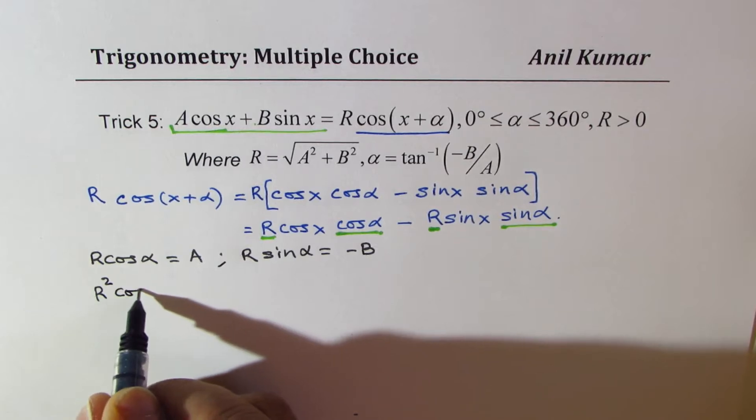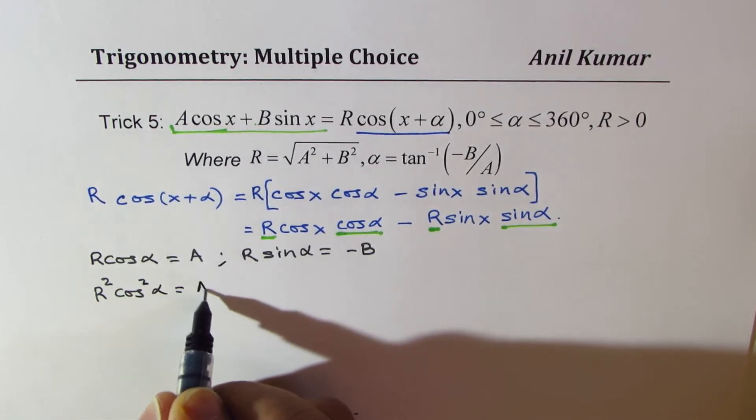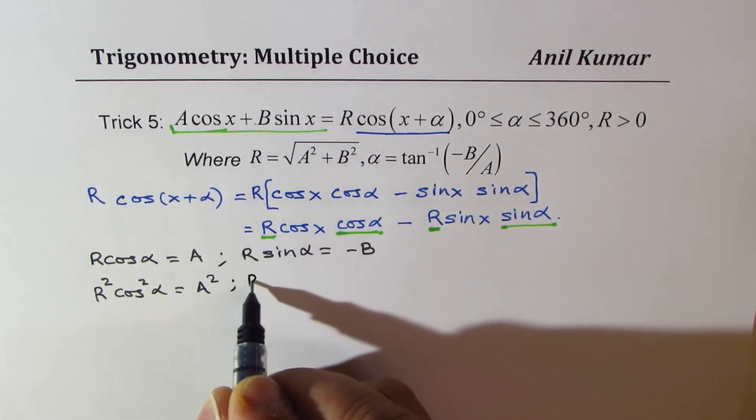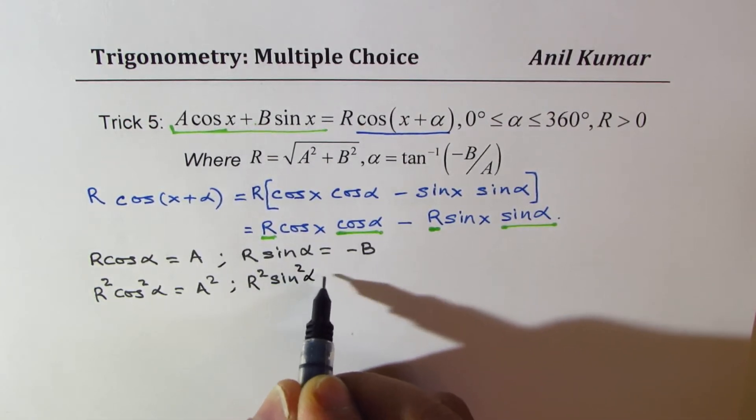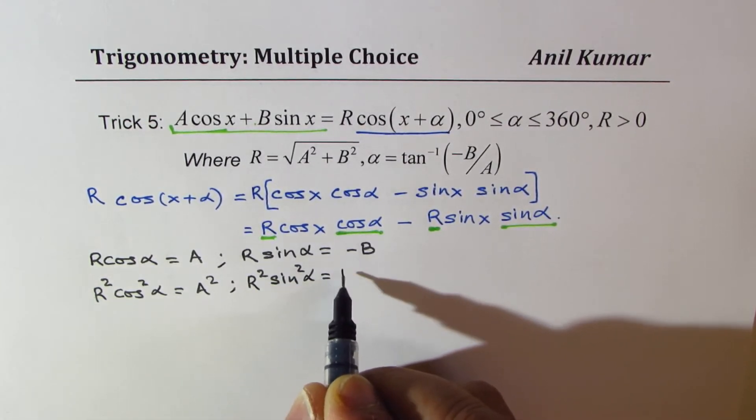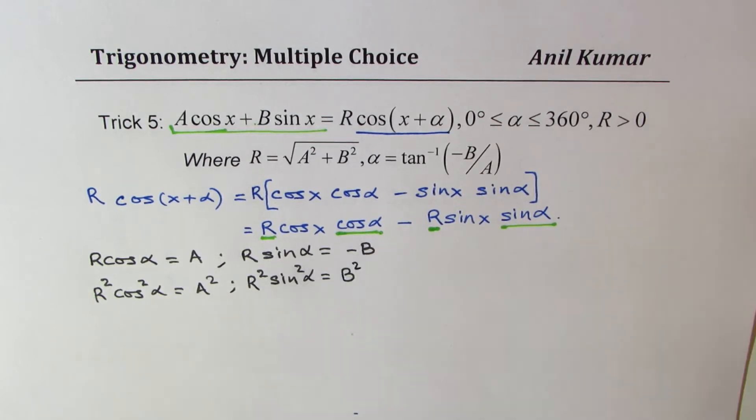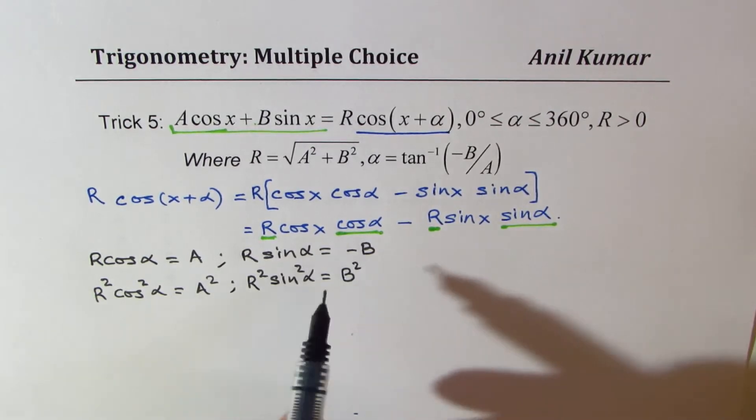And I also get R squared sin squared alpha equals B squared. When you square minus B, you get positive.